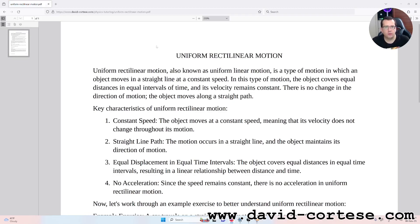Uniform rectilinear motion, also known as uniform linear motion, is a type of motion in which an object moves in a straight line at a constant speed.